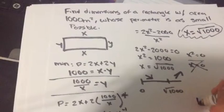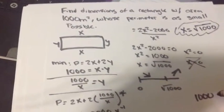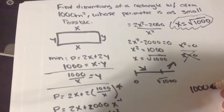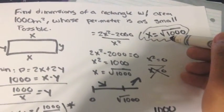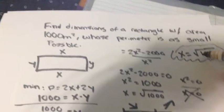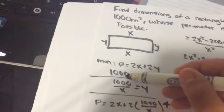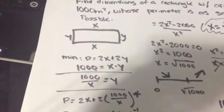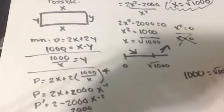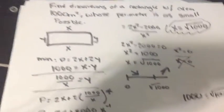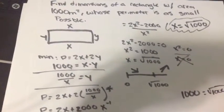So it will be 1000 to y. So you just plug that back in. So the area has to equal 1000, which is y.